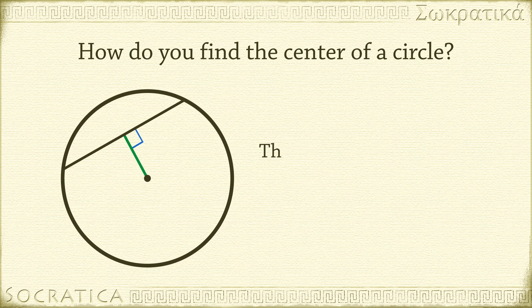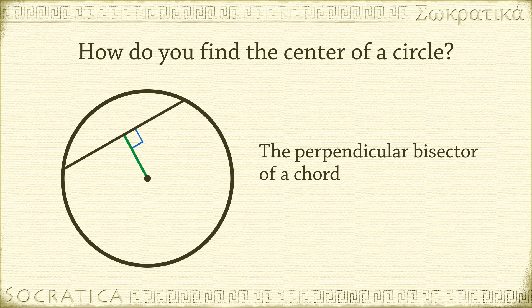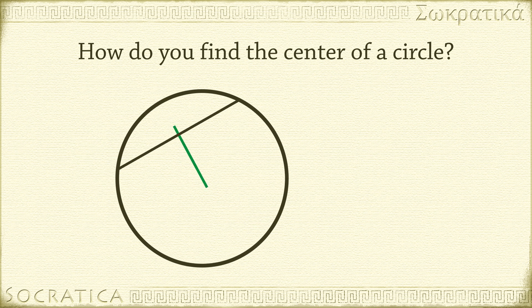In other words, the perpendicular bisector of a chord passes through the center of a circle. It's this fact that will allow us to find the center of the circle. Now, constructing the perpendicular bisector of a line segment is a classic geometric construction. If you don't know how to do this, or if you've forgotten, then check out our video on how to bisect line segments. We're now ready to find the center of this circle.